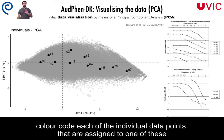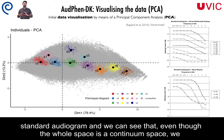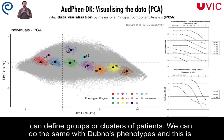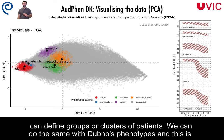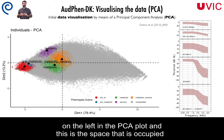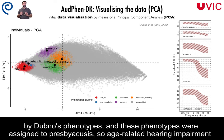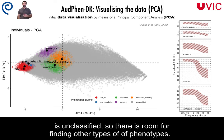Now we can color-code each of the individual data points assigned to one of these standard audiograms, and we can see that even though the whole space is a continuum, we can define groups or clusters of patients. We can do the same with DABNOS phenotypes. This is interesting because the younger people were placed on the left in the PCA plot, and that is the space occupied by the DABNOS phenotype, which was assigned to presbyacusis — age-related hearing impairment. About 70% of the data is unclassified, so there is room for finding other types of phenotypes.